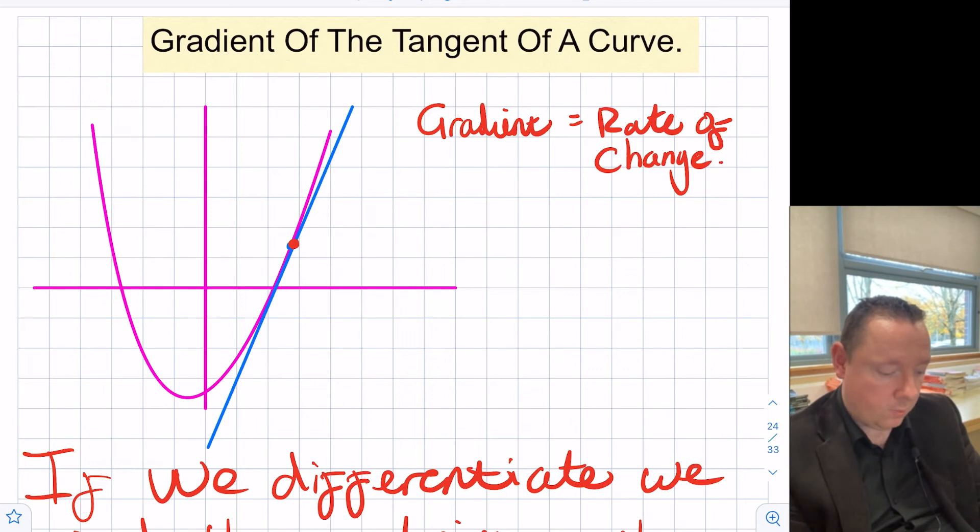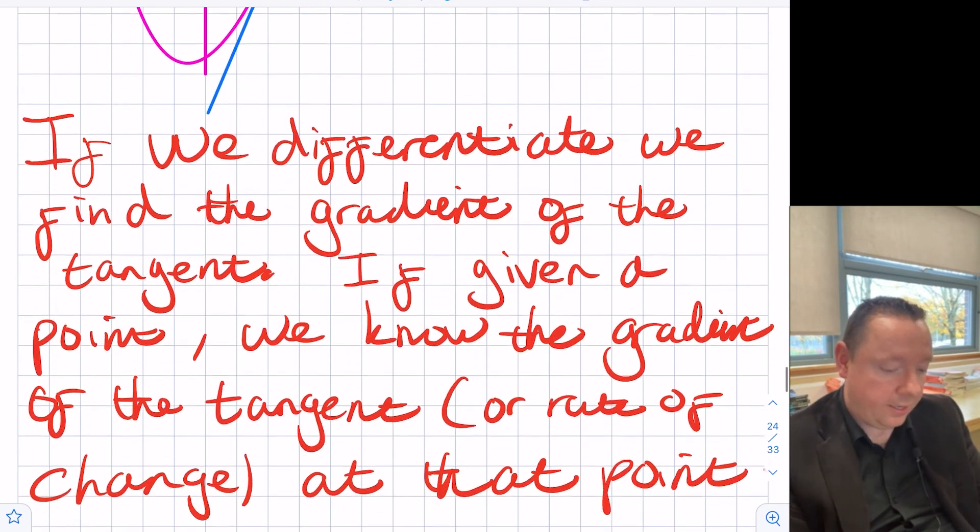The gradient then would be the same as the rate of change. It changes by, go along x, y changes by some number. If we go for every x, y changes. So at a specific point, we can find the gradient or the gradient of the tangent, which is the same as finding the rate of change. So if we differentiate, we find the gradient of the tangent.